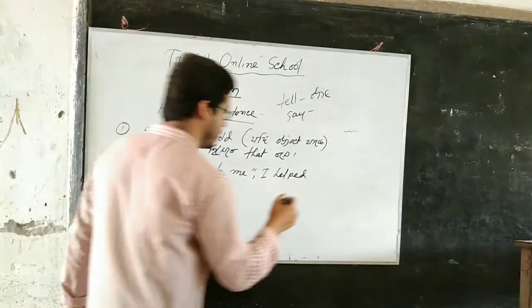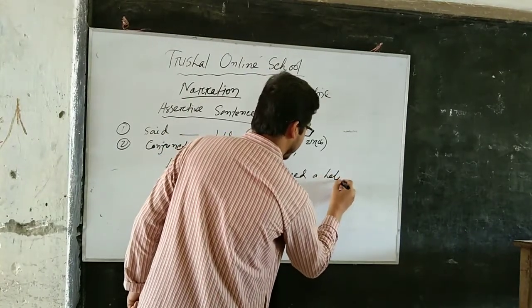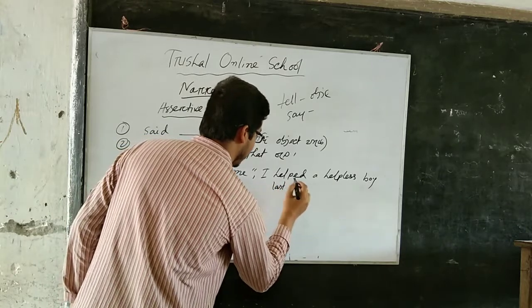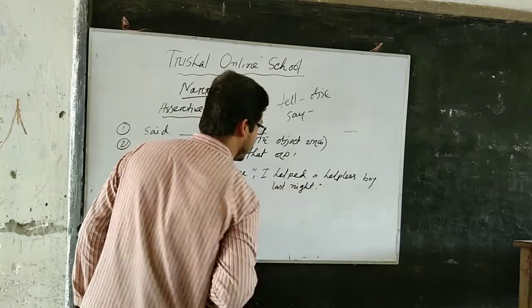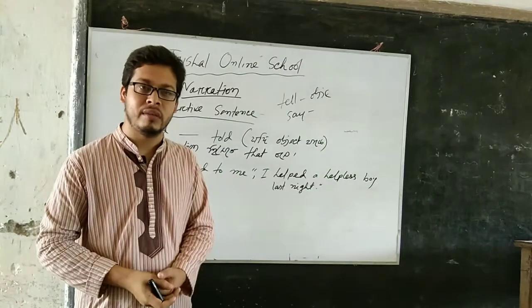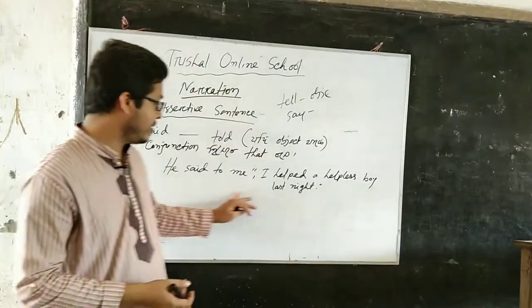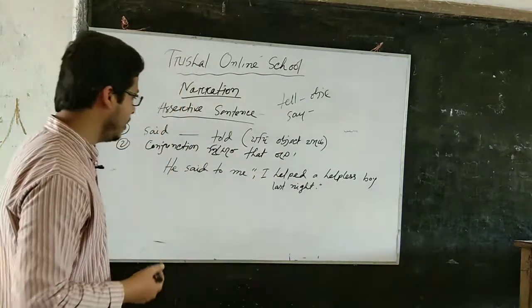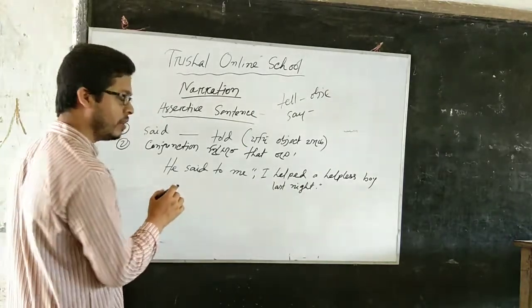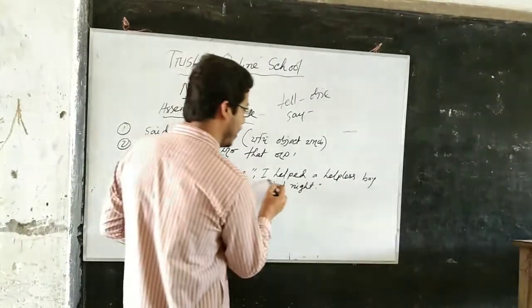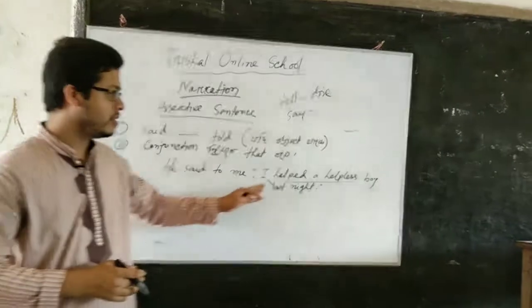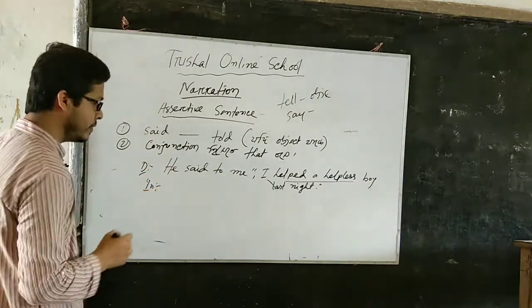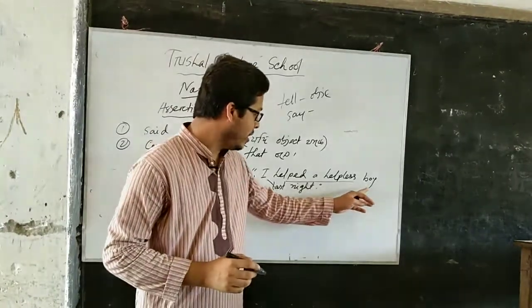Let us practice. The sentence is: 'He said to me, I helped a helpless boy last night.' So 'He said to me' is the reporting verb, and 'I helped a helpless boy last night' is the reported speech. This is an assertive sentence. First task: identify reporting verb and reported speech — done. Next: change from direct to indirect.